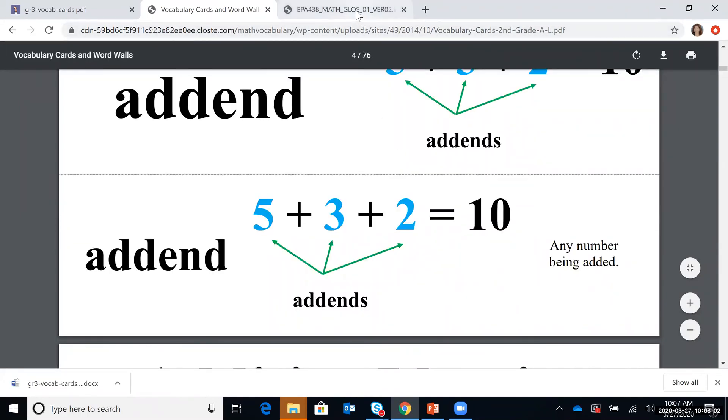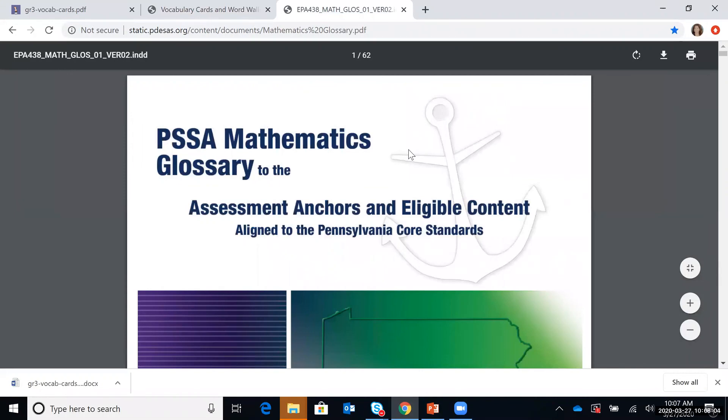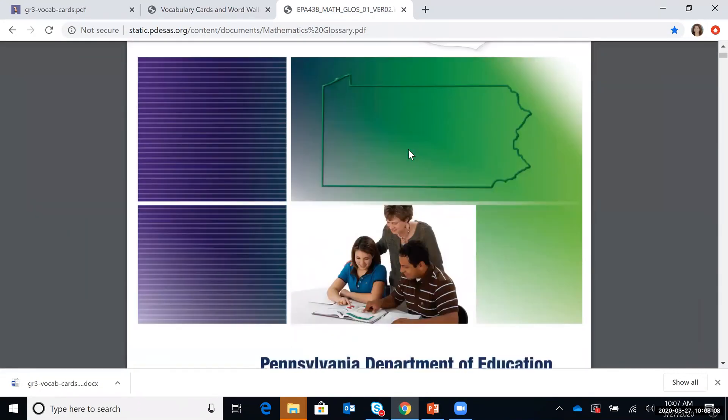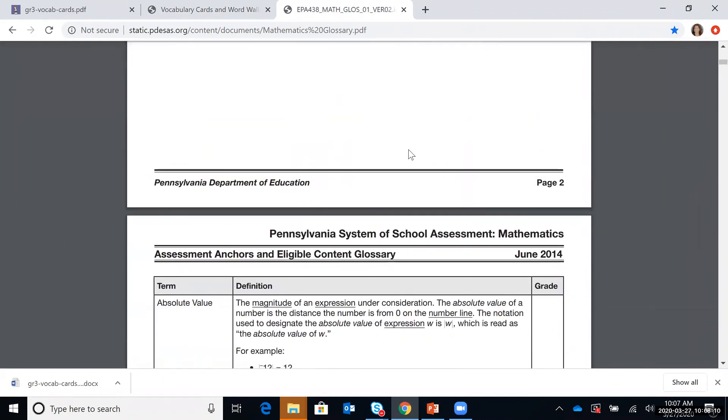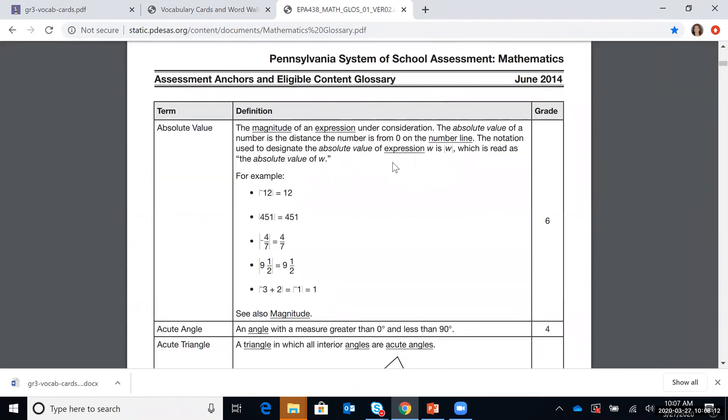The final resource is a Pennsylvania resource and it is the PSSA math glossary. So this starts with third grade terms and you can go through in alphabetical order. So here's the term. It includes a definition and then it also includes some grade levels in which students might be seeing these terms.